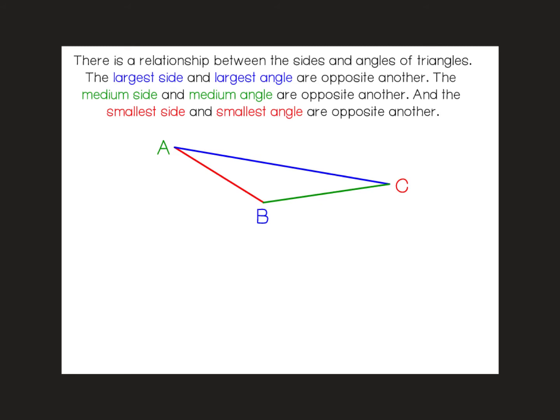For example, the largest side is always opposite the largest angle. The smallest side is opposite the smallest angle, and the medium side is across from the medium angle.